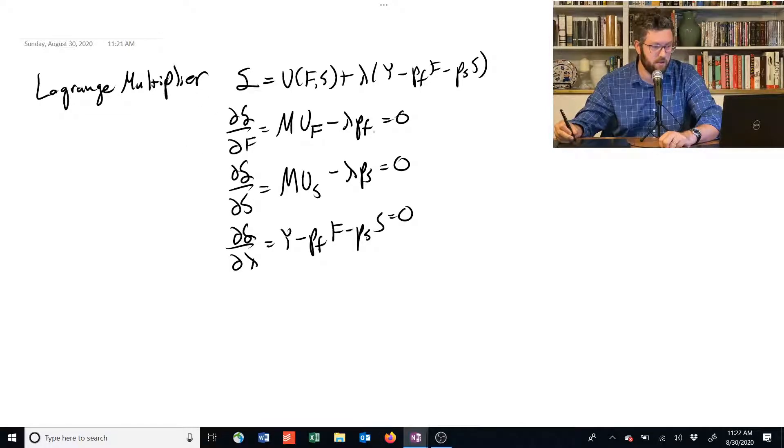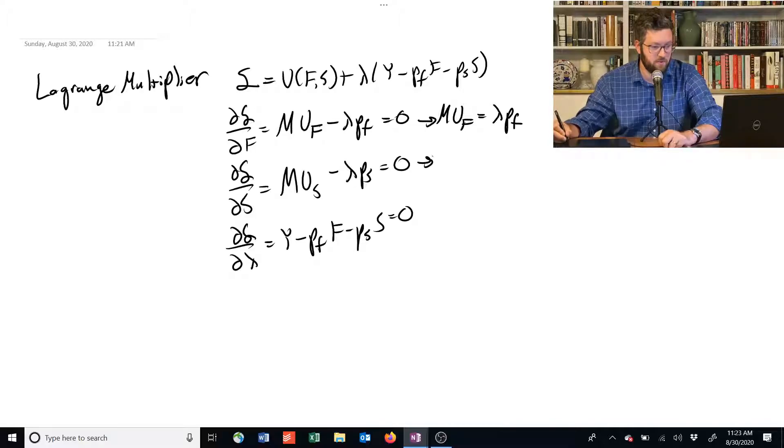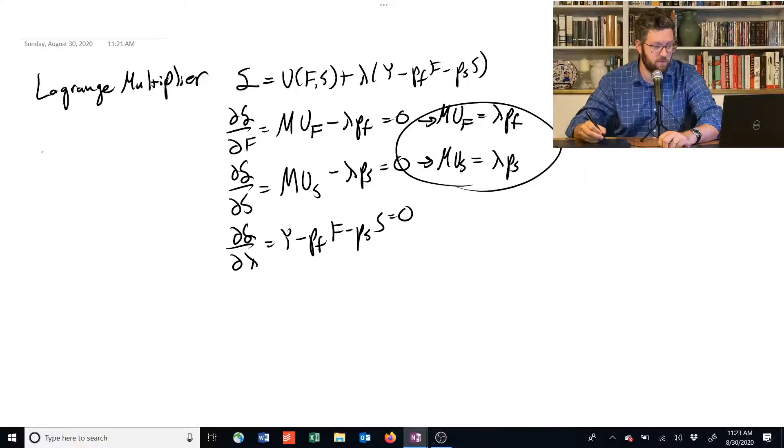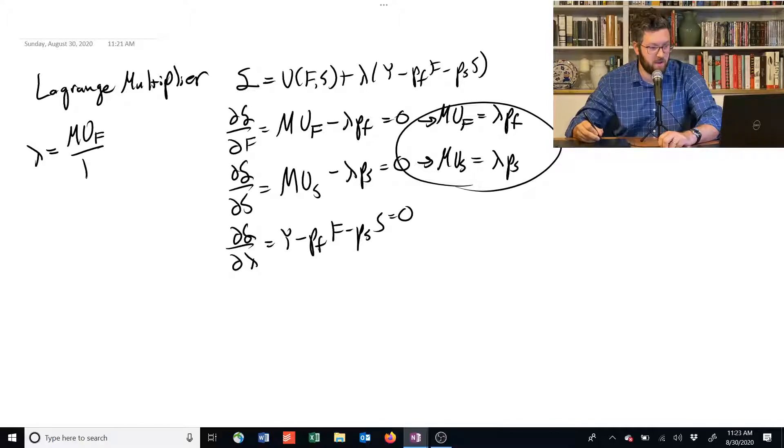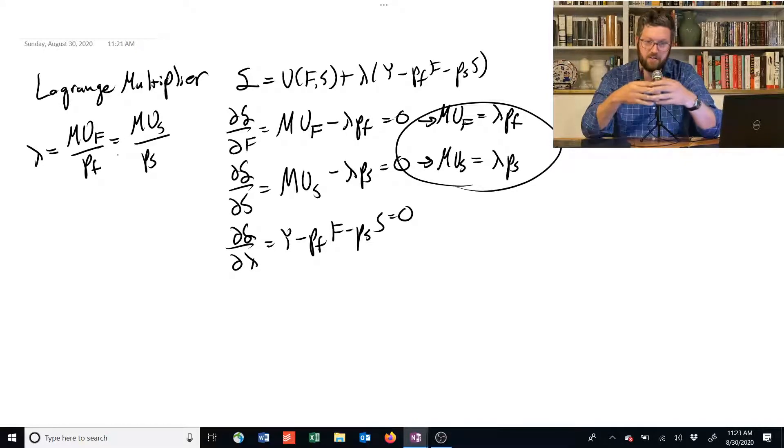So here we get that marginal utility of f equals lambda pf. This one tells us the marginal utility of s is equal to lambda times ps. And if we solve for lambda, we get that lambda is equal to the marginal utility of food divided by pf, but it's also equal to the marginal utility of shelter divided by ps. And these things are equal to each other. You can rearrange that and you get the condition that the marginal rate of substitution is equal to the ratio of prices.